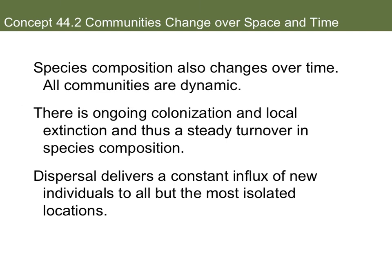Species composition also changes over time, naturally and normally. It's important to understand that all communities are dynamic — they do change. There are fluctuations and an ongoing cycle of colonization and local extinction, causing a steady turnover in species. Steady turnover means that one particular species may have an advantage and thrive this month, but a different population may dominate in six months. Dispersal delivers a constant influx of new individuals, so organisms are constantly coming into and leaving an area.